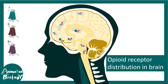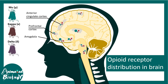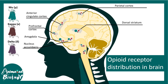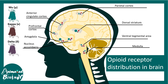There are different types of opioid receptors — mu, kappa, and delta — found in different locations in the brain. The most important locations include the anterior cingulate cortex, prefrontal cortex, amygdala, nucleus accumbens, parietal cortex, dorsal striatum, ventral tegmental area, and medulla. They are also present in many other locations at baseline expression levels.